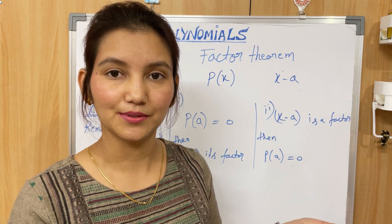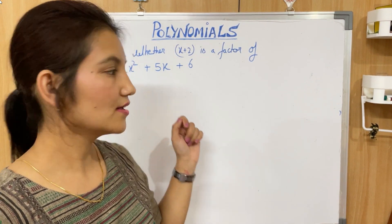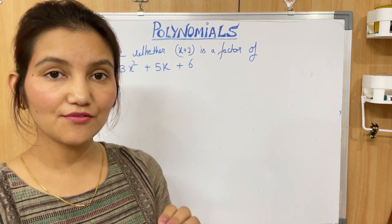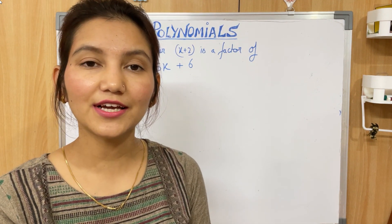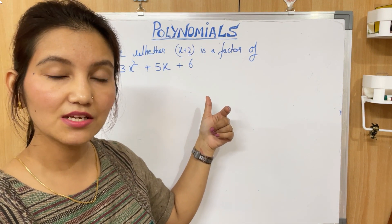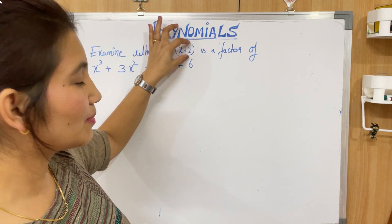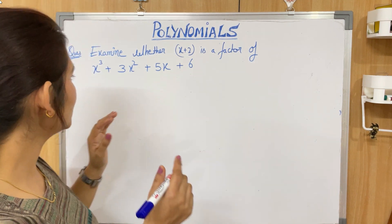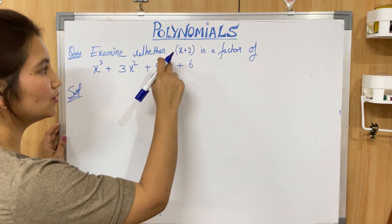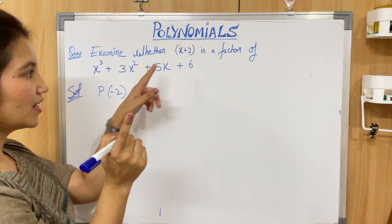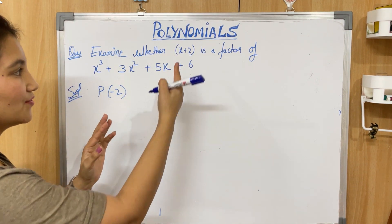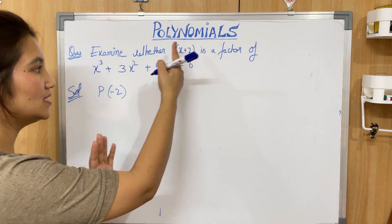Let's understand this with an example. Examine whether (x + 2) is a factor of x³ + 3x² + 5x + 6. Factor Theorem says (x + 2) is a factor only if the remainder is 0, i.e., if p(−2) = 0. Since the factor is (x + 2), we use x = −2. If it were (x − 2), we'd use x = 2. We simply find p(−2) and check.